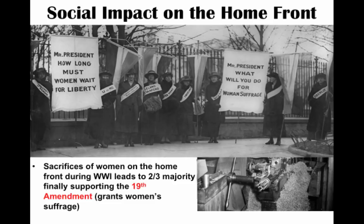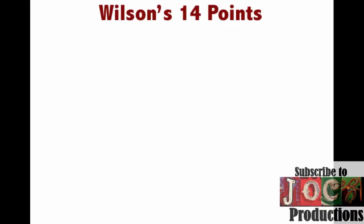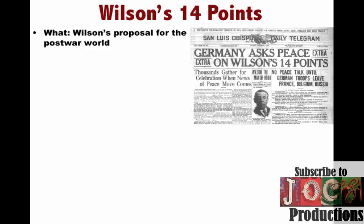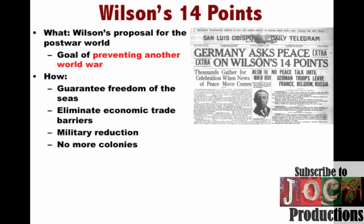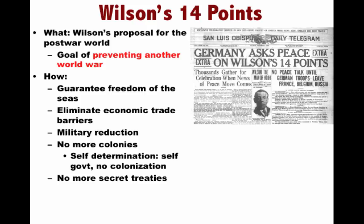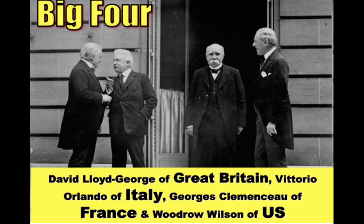As the war is winding down, Wilson has a vision for the post-war world known as the 14 Points. This is his proposal, and in it he really wants to prevent another world war from happening — to address the causes of the First World War and make sure those things never take place again. He wants to guarantee freedom of the seas, eliminate economic trade barriers, reduce military arms races, allow self-determination for nations to have self-government with no more colonization, no more secret treaties. And the big thing he really wants is the formation of a League of Nations to help prevent another war.